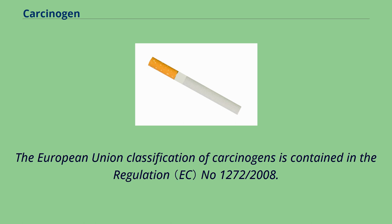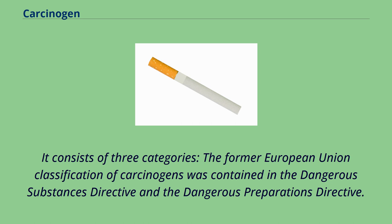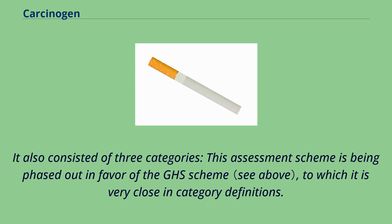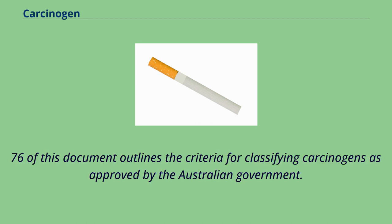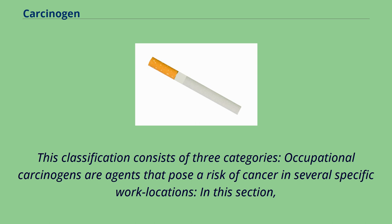The European Union classification of carcinogens is contained in Regulation No. 1272/2008 and consists of three categories. The former EU classification was contained in the Dangerous Substances Directive and the Dangerous Preparations Directive, also consisting of three categories, and is being phased out in favor of the GHS scheme. In 1999, Safe Work Australia published the Approved Criteria for Classifying Hazardous Substances, NOHSC:1008, Section 4.76, which outlines criteria for classifying carcinogens in three categories.